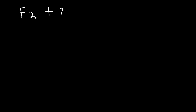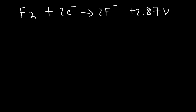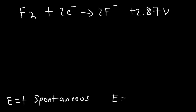In this video we're going to focus on standard reduction potentials. For fluorine, fluorine acquires two electrons and turns into two fluoride ions, and the cell potential for this half reaction is positive 2.87 volts. Whenever the cell potential is positive, the process is spontaneous in the forward direction. If the cell potential is negative, it's non-spontaneous in the forward direction but spontaneous in the reverse direction.